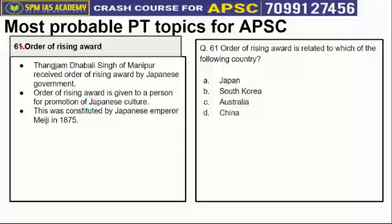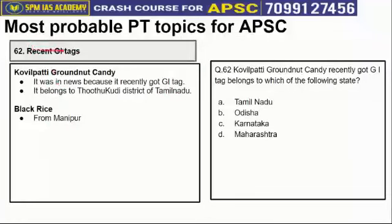In our segment of most probable PT topics for the upcoming APPSC exam, today we'll cover topic numbers 61 to 63. Topic number 61 is the Order of Rising Award: Thangjaam Dhabali Singh of Manipur received this award from the Japanese government. The Order of Rising Award is given to a person for promotion of Japanese culture, and was constituted by Japanese Emperor Meiji in 1875. Topic number 62 is about a recent GI tag: Kovilpatti groundnut candy got a GI tag recently — it belongs to Thoothukudi district of Tamil Nadu. Black rice from Manipur also got a GI tag.